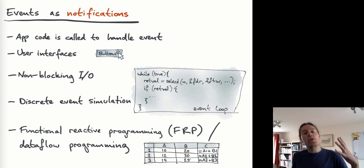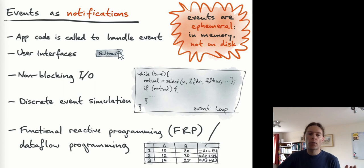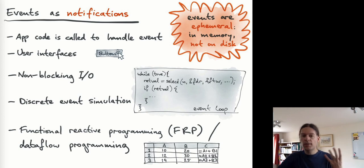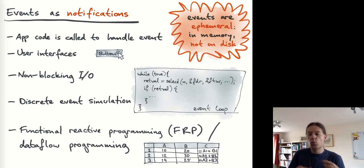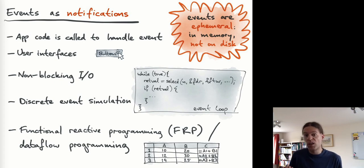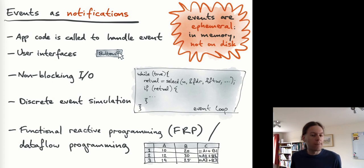All of these uses of events as notifications are ephemeral — events that only exist in memory as transient things, essentially calling a piece of program code. The event itself is not usually something that would be written to disk, because it has no lasting value; it's just part of the execution of a program.